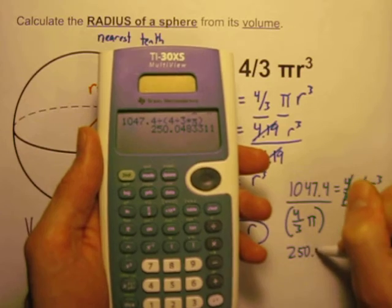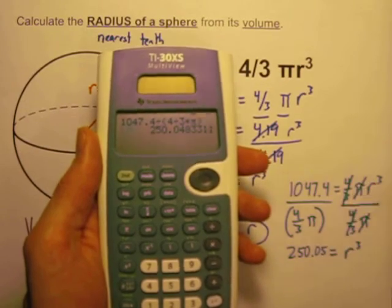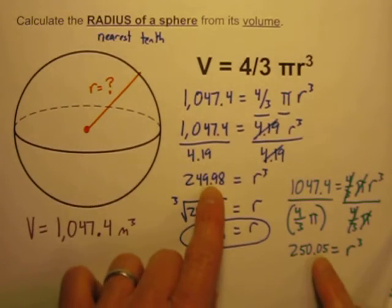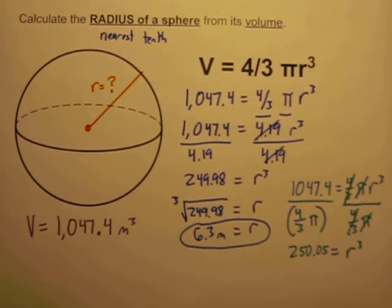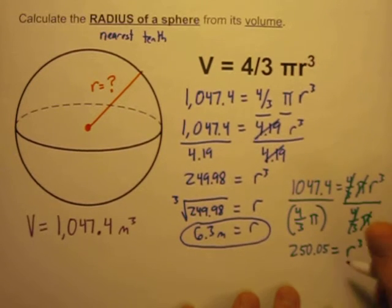But notice this is a little bit different than we had before. 250 point, to the nearest hundredth, we'll say 05. Not a lot different, but it is a little bit different than what we had before. But now, I know this is equal to r to the third power, so if I take the cube root of both sides, I'll get r by itself over here.